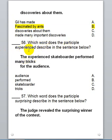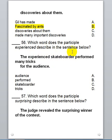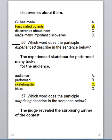Question 56: Which word does the participle 'experienced' describe in the sentence below? 'The experienced skateboarder performed many tricks for the audience.' Here, 'experienced' describes 'skateboarder,' so we're going to choose C.